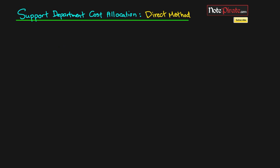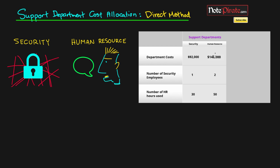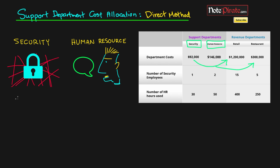Let's bring up some numbers. We've got two different support departments: Security on the left and HR on the right, along with some illustrations. We have these department costs and we want to allocate them to the revenue producing departments — the 92,000 from Security and the HR costs to both Retail and Restaurant. This method completely ignores that support departments help each other, allocating as if support departments only serve the revenue producing departments.